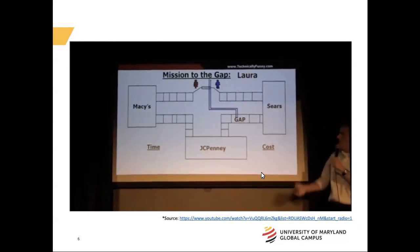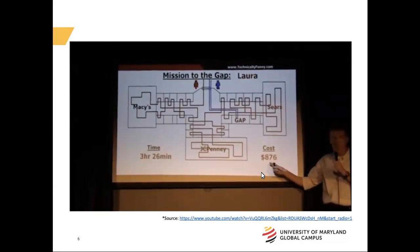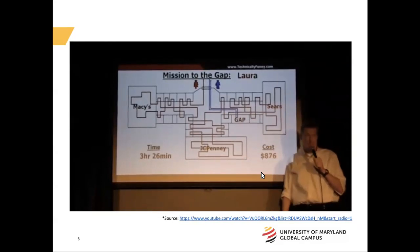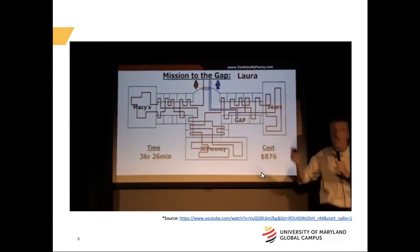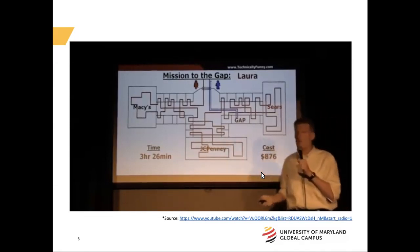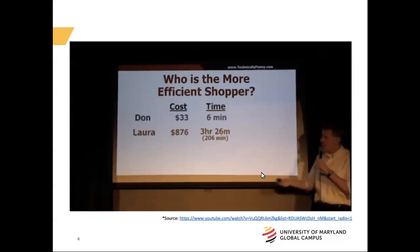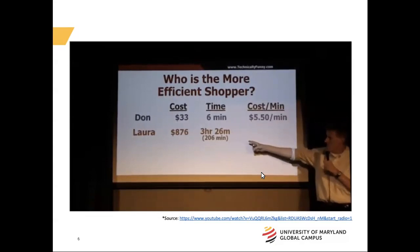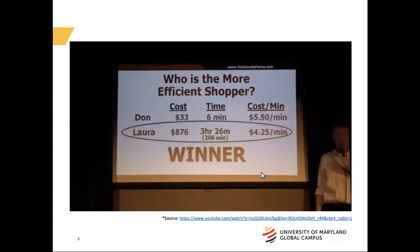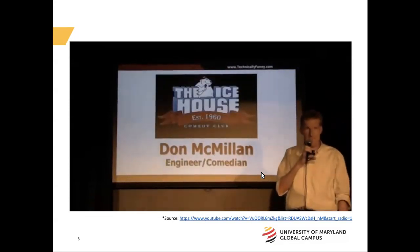The stunning thing: his wife saw this bit and came back with an answer. She said, 'You're looking at the mall thing all wrong — let's see who's the more efficient shopper in terms of cost per minute.' He spent $33 in six minutes: $5.50 per minute. She spent $876 in 206 minutes: $4 per minute. She kicked his ass. And that's when he knew his wife was the woman for him.